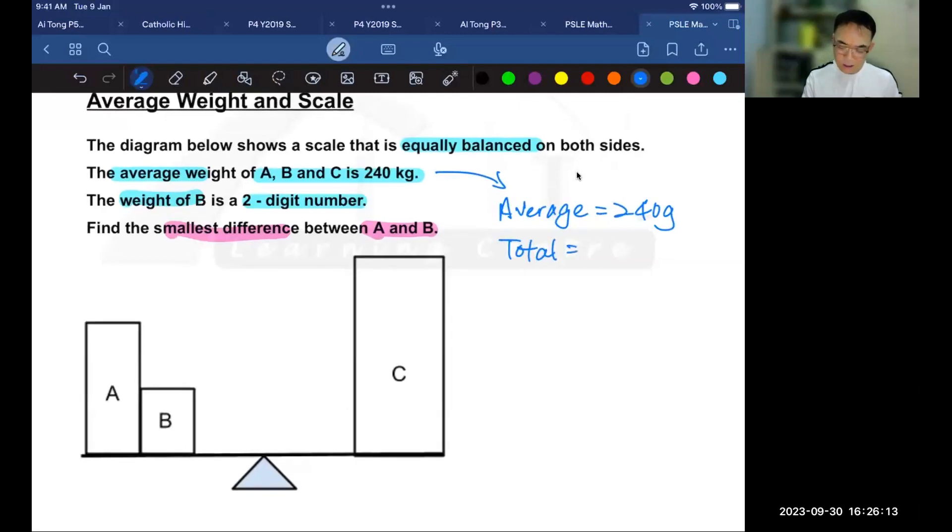If your answer is to take 240 grams times 3, because there are three items, then you're perfectly right. Now, my next question to you is: what is the weight of A and B?